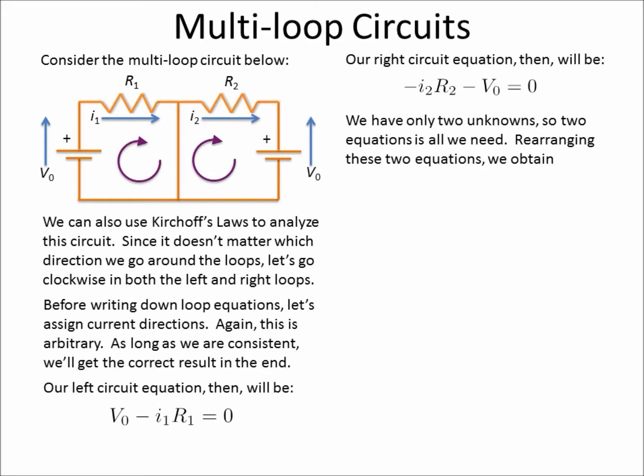So now that we've done this, we have two unknowns. We assume we know R1 and R2 and the voltage sources, both of them are V-naught in this case. What we're looking for is I1 and I2.